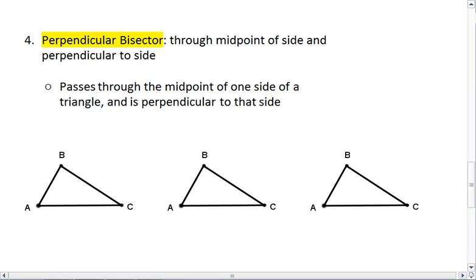The fourth special segment or line we'll talk about is a perpendicular bisector. A perpendicular bisector, I want you to break down the words. First, it bisects. But instead of bisecting an angle, we're going to bisect a side. So we're going to go through our midpoints again.